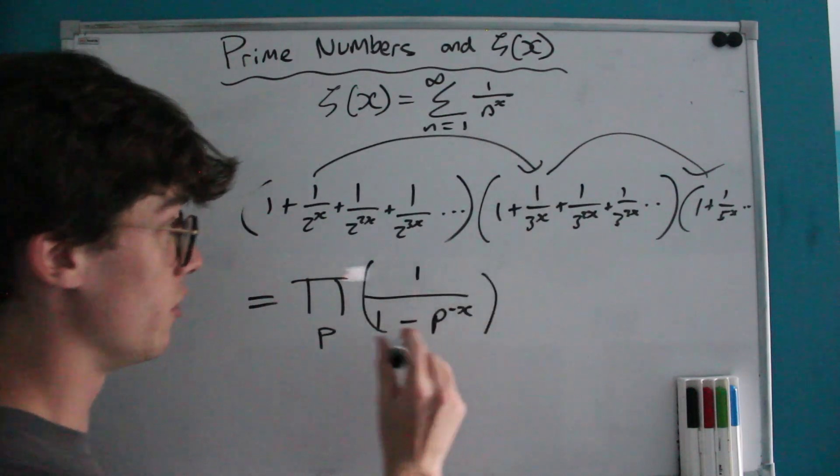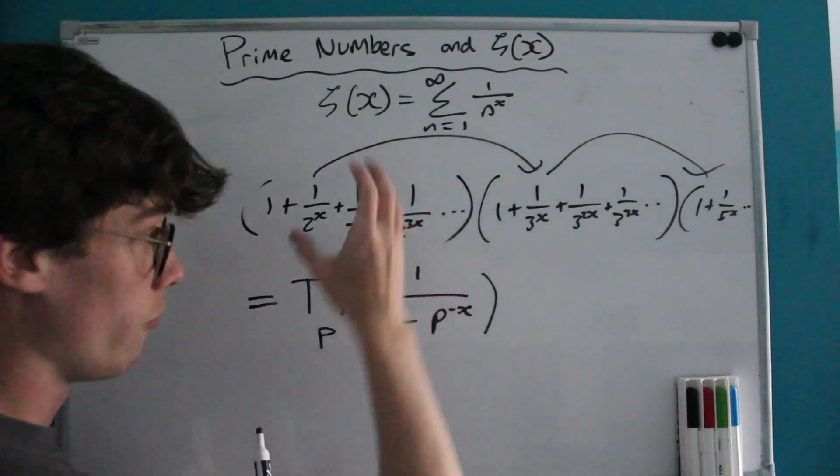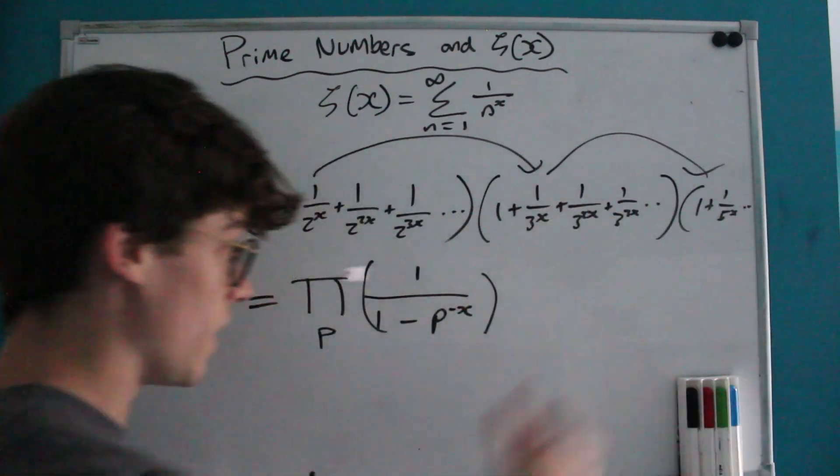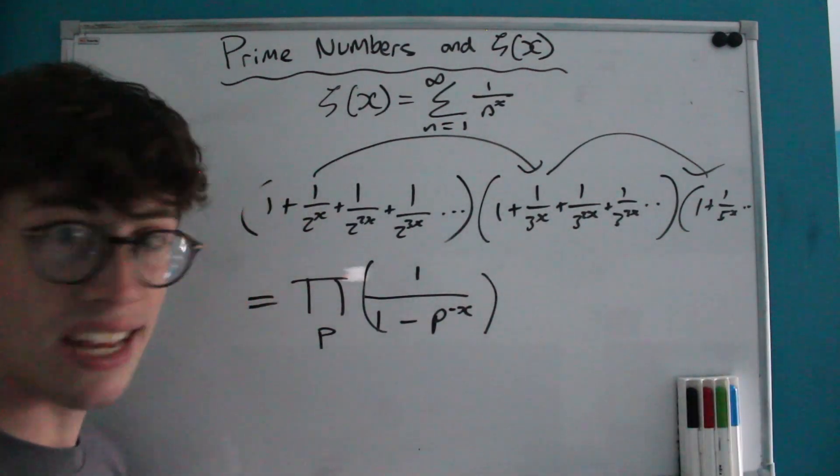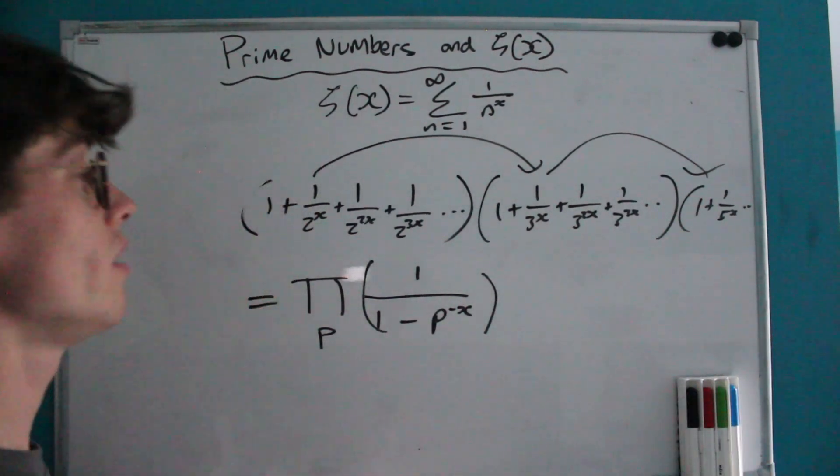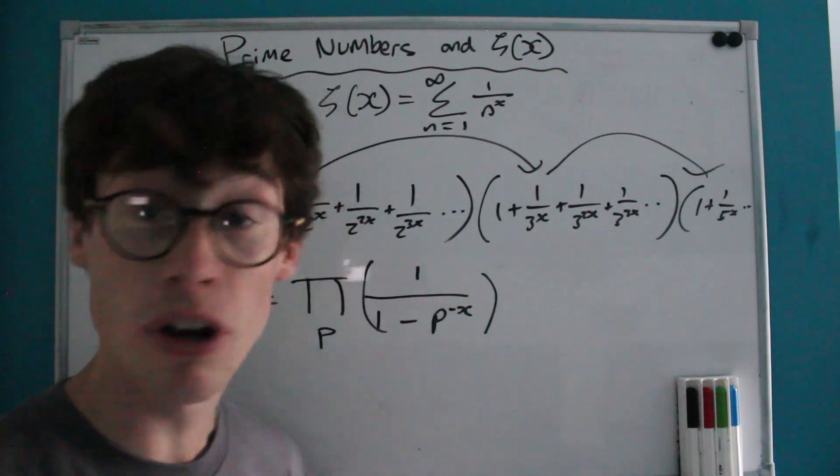And that's because what we're saying is that if we have each of these infinite series for every prime and we multiply them together through the expansion of our brackets off to infinity we will end up with every possible number on the denominator because we'll end up with every possible combination of primes.